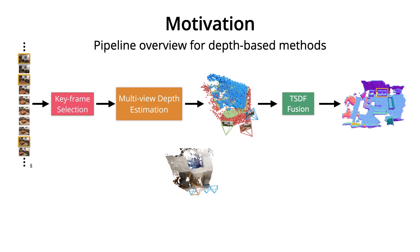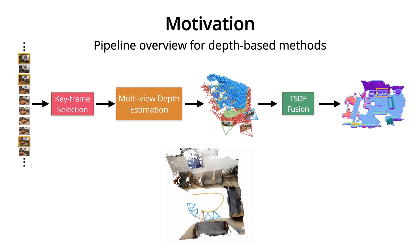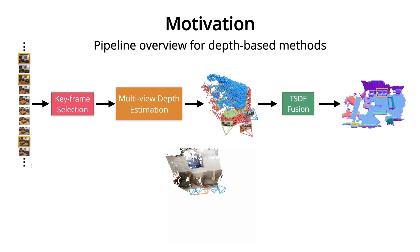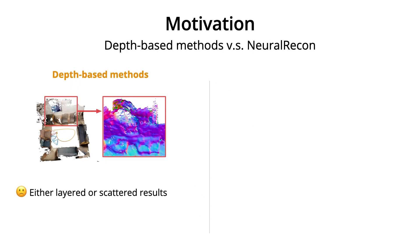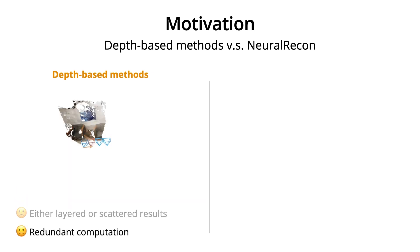A typical pipeline for 3D reconstruction with a monocular camera looks like this. A few keyframes are first selected from the input video sequence and sent through the multi-view depth estimation network to estimate single-view depth maps. These depth maps are later unprojected to 3D point clouds and fused into a TSDF volume, which represents the reconstructed scene geometry. Since the depth maps are estimated individually from each reference view, they are usually not very consistent in scale and also contain a lot of noise. When these inconsistent depth maps are fused together into a TSDF volume, the reconstruction result is often layered or even scattered. The depth-based method also contains redundant computation, since the depth of the same 3D location is estimated multiple times during the shift of reference views.